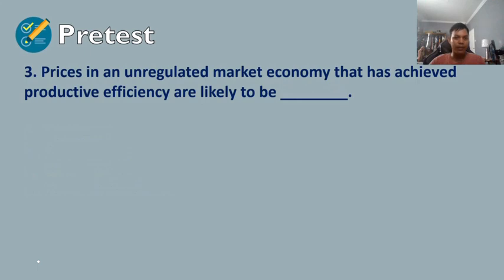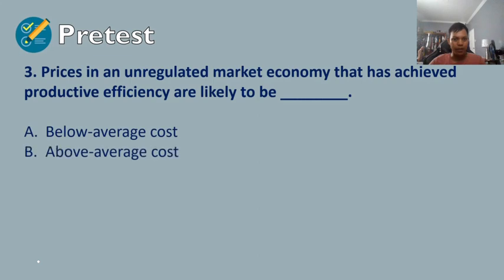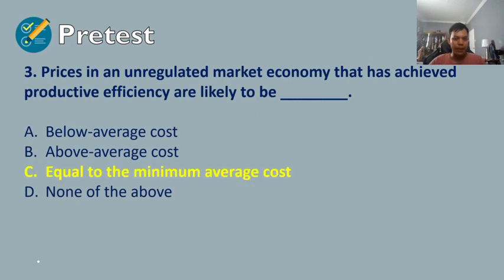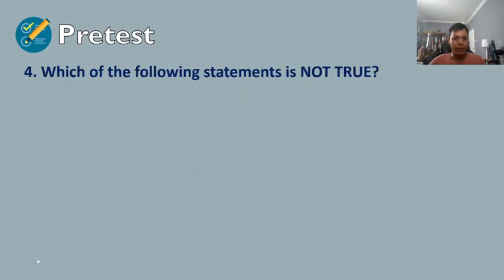Question number three: prices in an unregulated market economy that has achieved productive efficiency are likely to be: A) below average costs, B) above average cost, C) equal to the minimum average cost, or D) none of the above. The answer is C, equal to the minimum average cost.